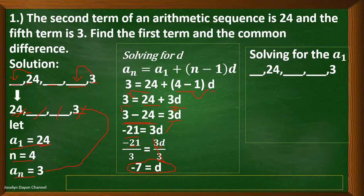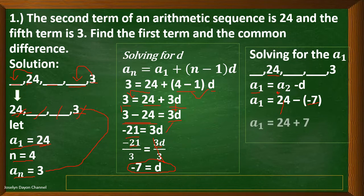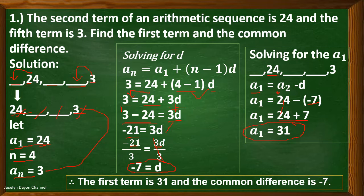Going back to the given problem, 24 is the second term. To solve for the first term, just subtract the second term by the common difference: 24 minus negative 7 equals 31. By solution, the first term equals the second term minus the common difference: 24 minus negative 7 equals 24 plus 7, which is 31. Therefore, the first term is 31 and the common difference is negative 7.